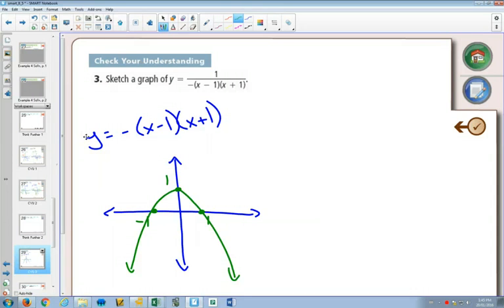If we wanted to label some other points on here, we could. We have the point 2 comma negative 3 and negative 2, negative 3.